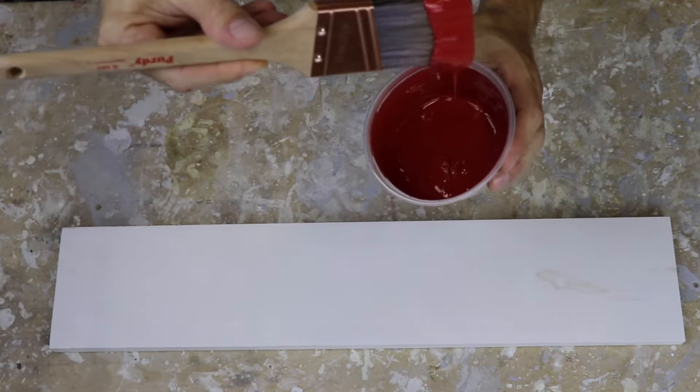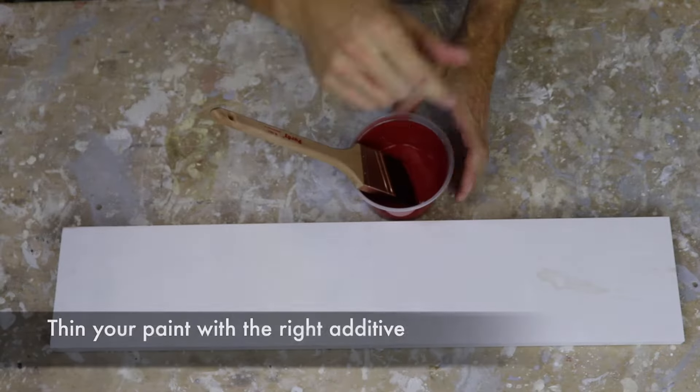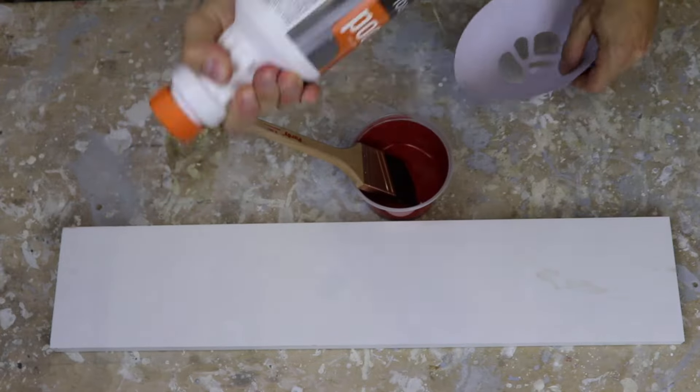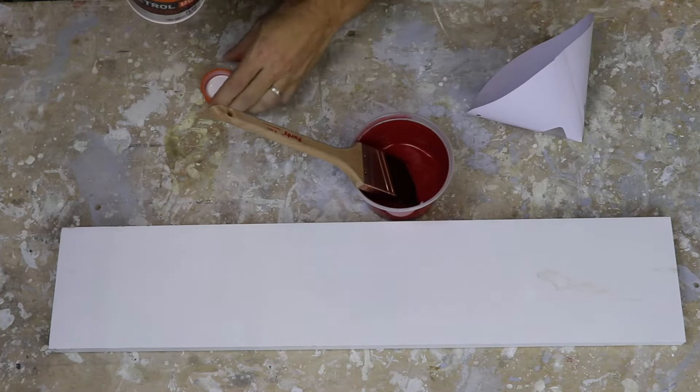Now this paint's straight out of the can, so it's pretty gloppy. Next thing I'm going to do is put in an additive. For water-based paints I use Floetrol, and for oil-based paints I use Penetrol.